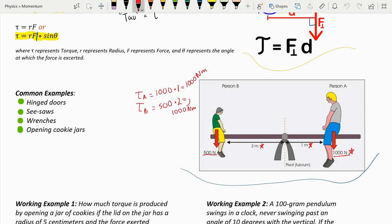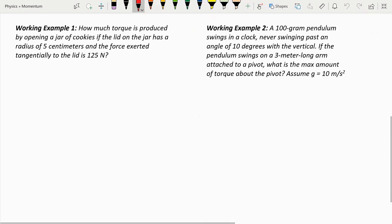Now, let's do our first working example. How much torque is produced by opening a jar of cookies if the lid on the jar has a radius of 5 centimeters, and the force exerted tangentially on the lid is 125 newtons?